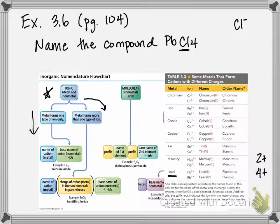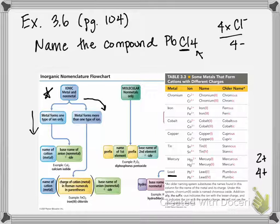Since we have 4 chlorines, we have 4 times −1, which means we have a total 4− charge that we have to neutralize in order to get a neutral compound. So if we have 4 chlorines each with a minus charge, they're contributing 4− to the overall charge, which means in order to cancel that 4− out, lead has to be 4+.